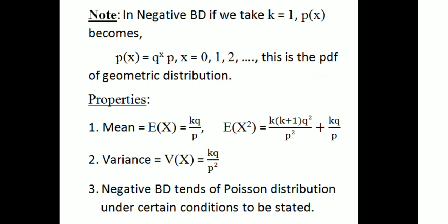Properties of the negative binomial distribution: the mean equals E(X) = KQ/P. E(X²) = K(K+1)Q²/P² + KQ/P. The variance of X equals KQ/P². The negative binomial distribution tends to the Poisson distribution under certain conditions.